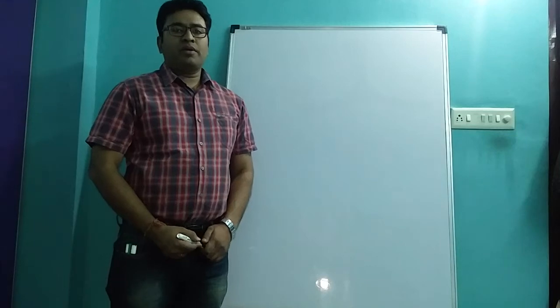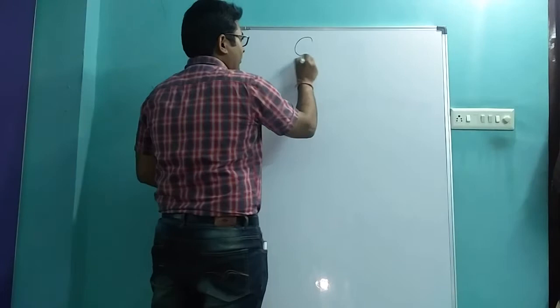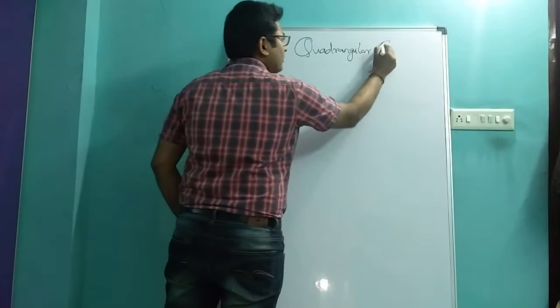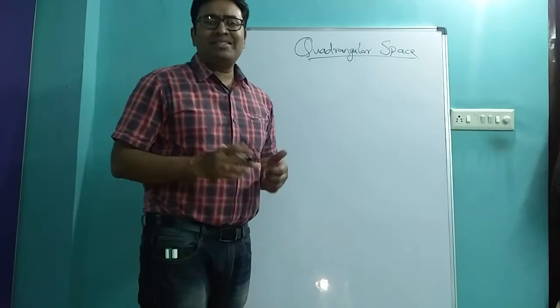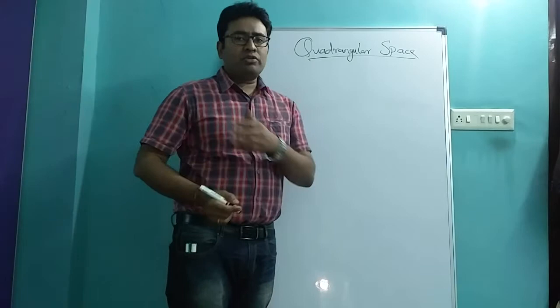Hello students, today we are going to discuss the quadrangular space. What exactly is quadrangular space and where is it located? What is the boundary and its content? That is what is important for us. The quadrangular space is related with the axilla, not in the anterior side, but present towards the posterior side.